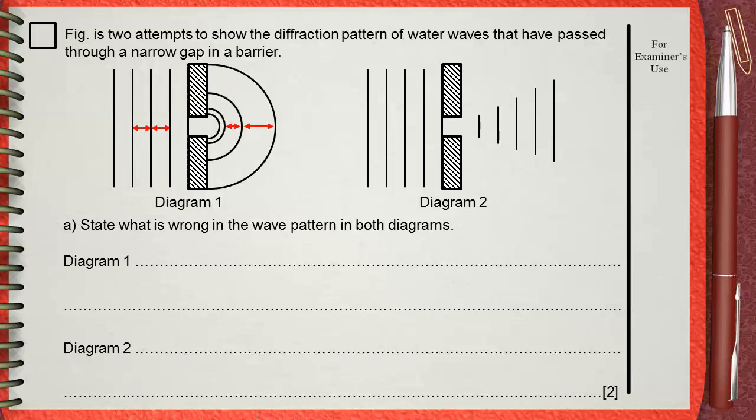In diagram 2, the diffracted wave must have some curvature, not to be straight lines.